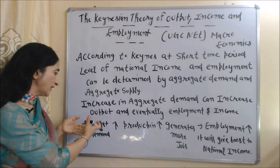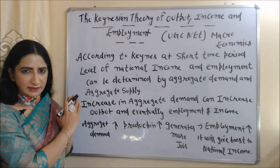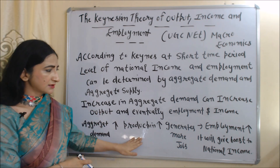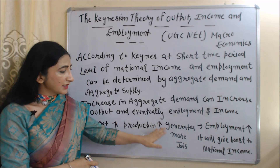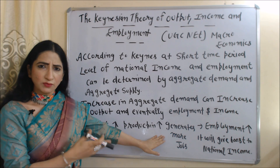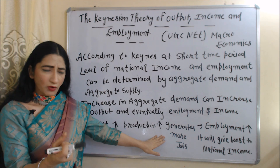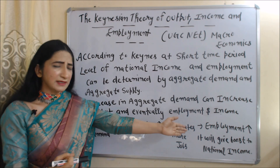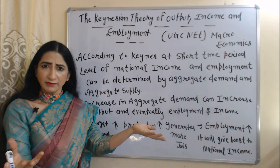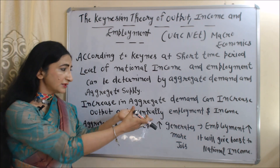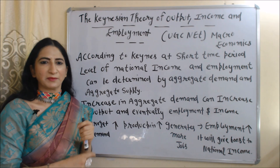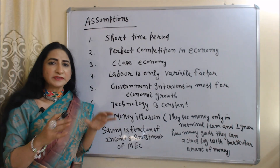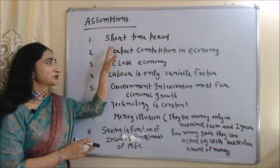For example, as aggregate demand increases, production also increases and it will generate more jobs in the economy. As a result, employment will increase and it will give a boost to national income. Now we will see the assumptions of this theory.